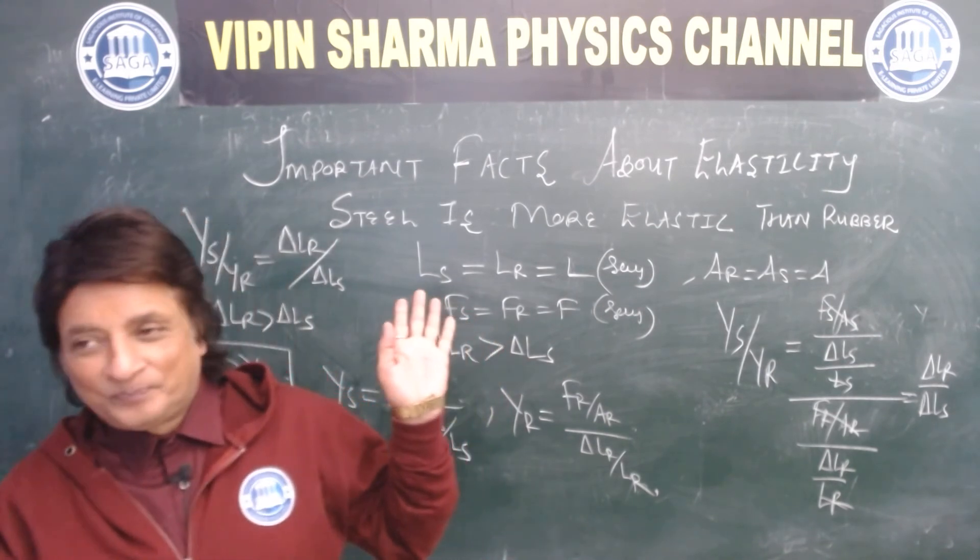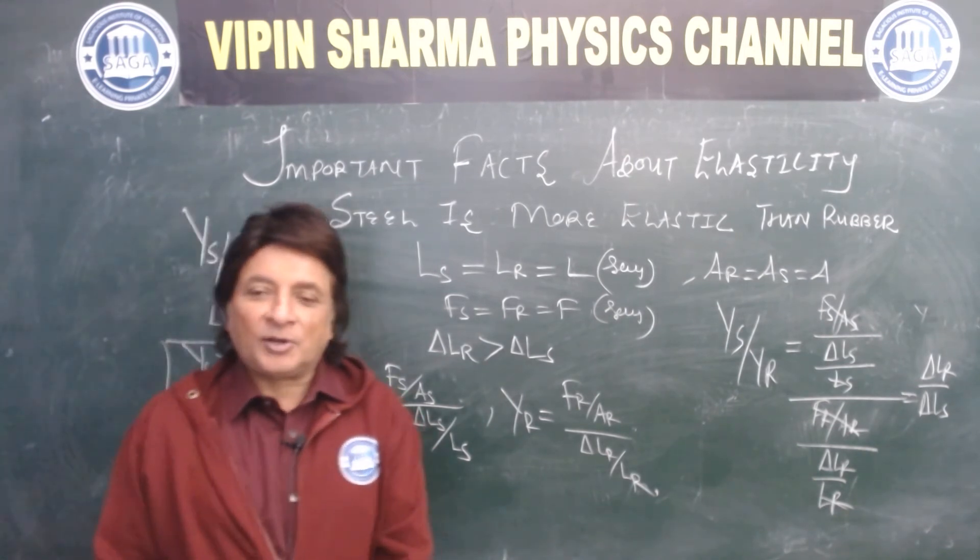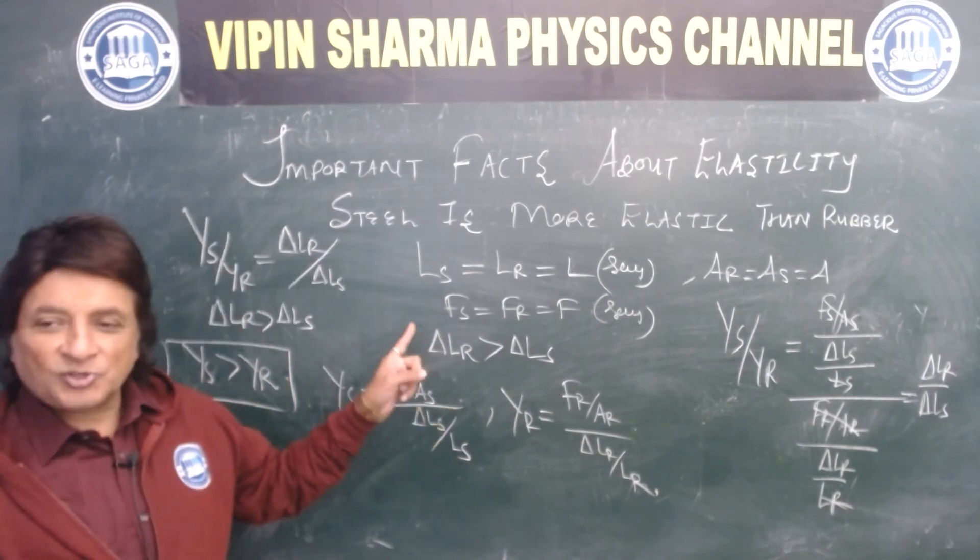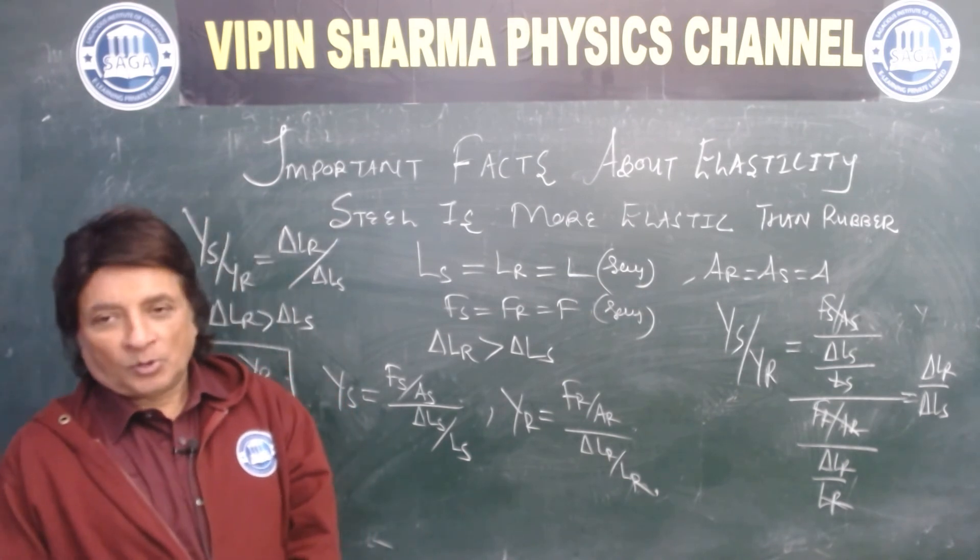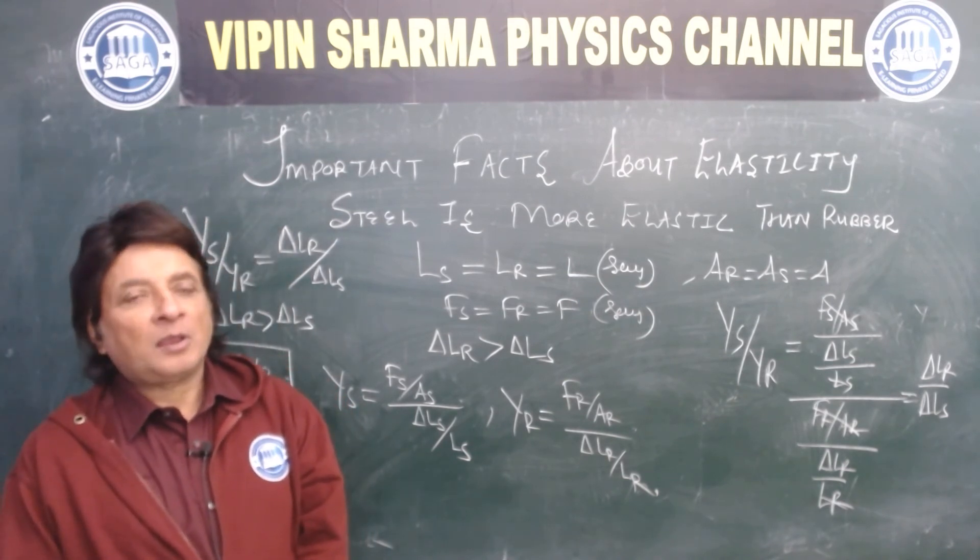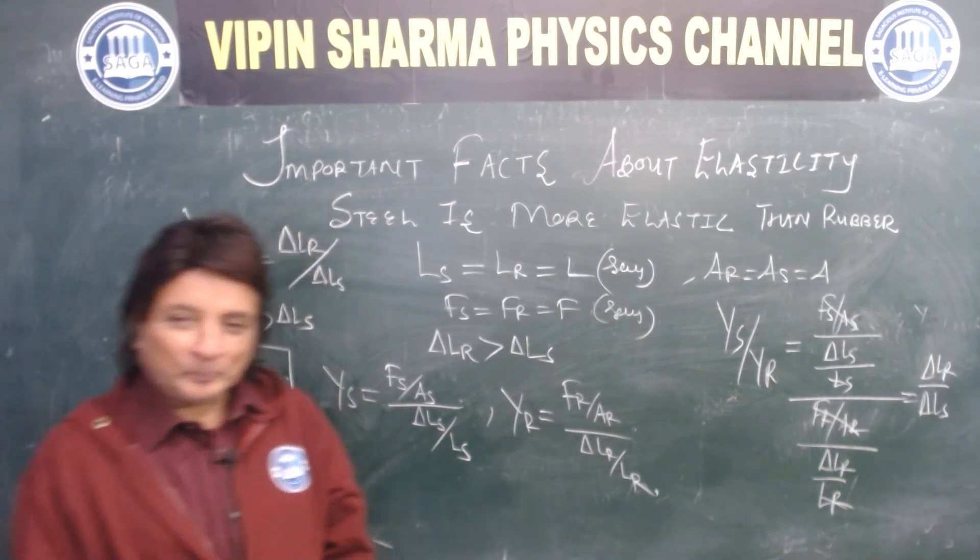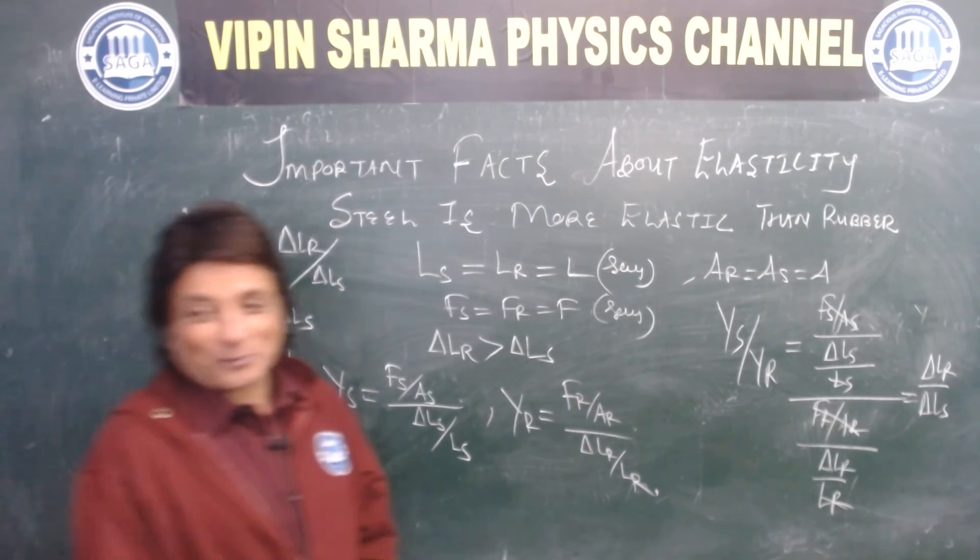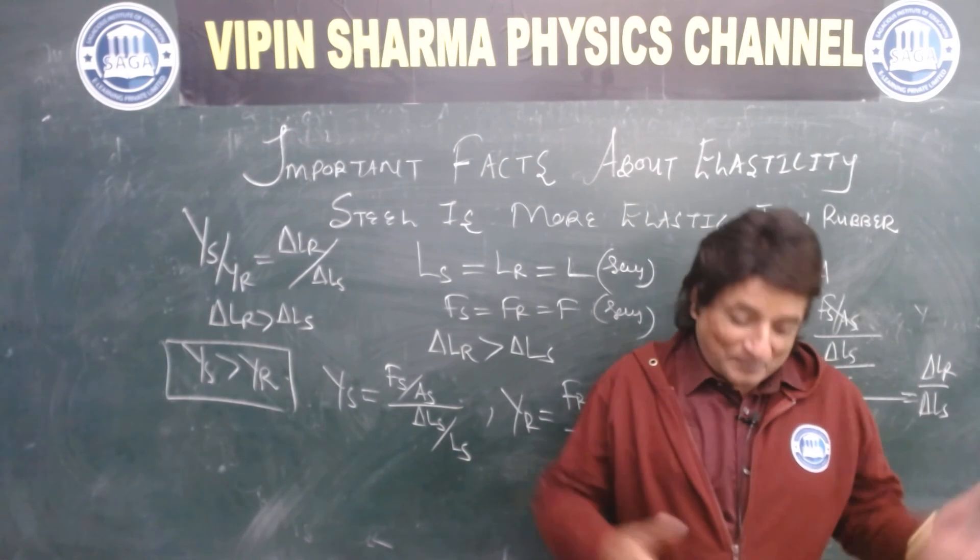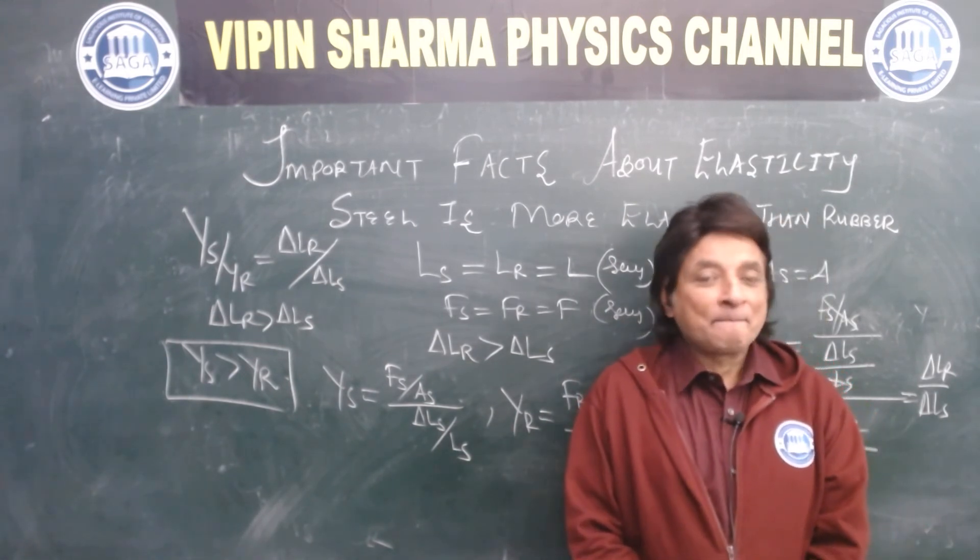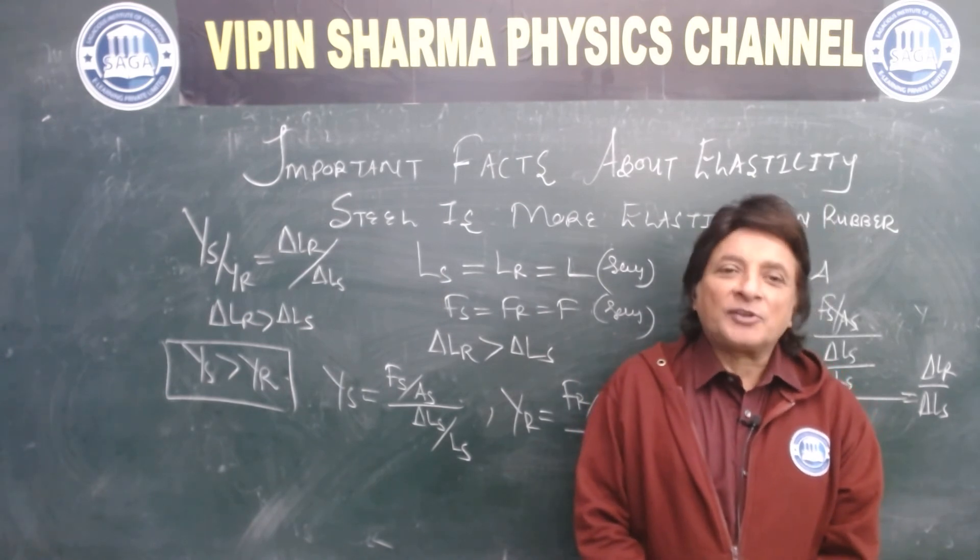So dekhne meh steel deform nahi hum bolenge yeh elastic kaha se hai. Our mind has been conditioned that jo bohut zyada elastic hai wohi deform hota hai zyada. No, no, no, no. Steel is more elastic than rubber. It's in front of you.